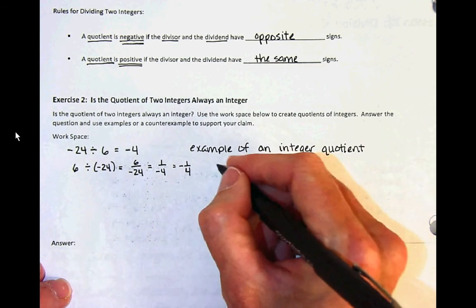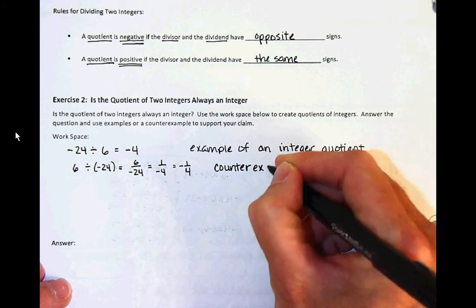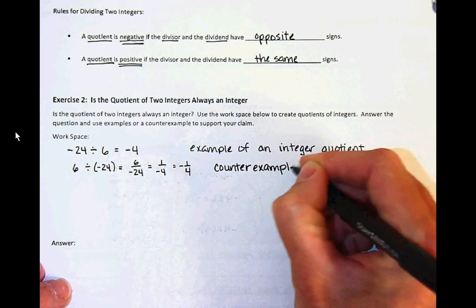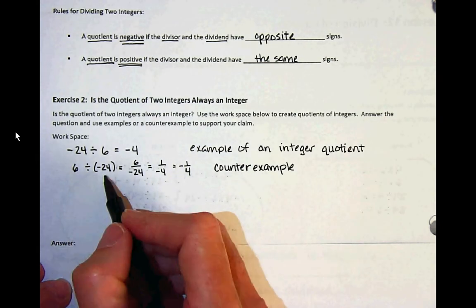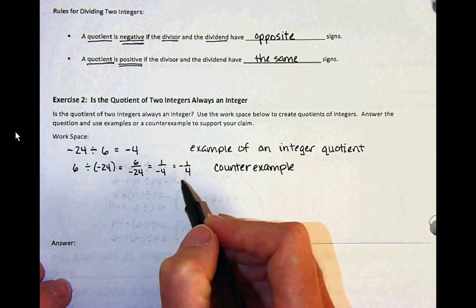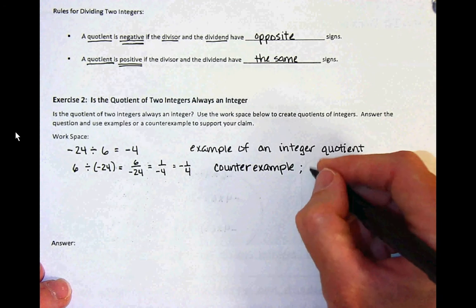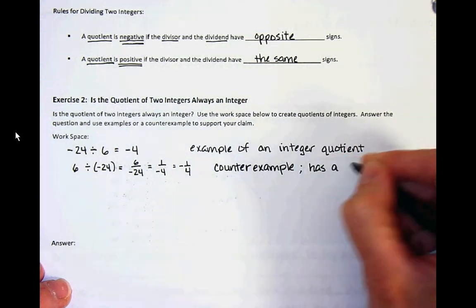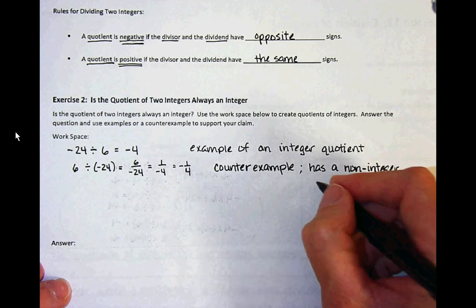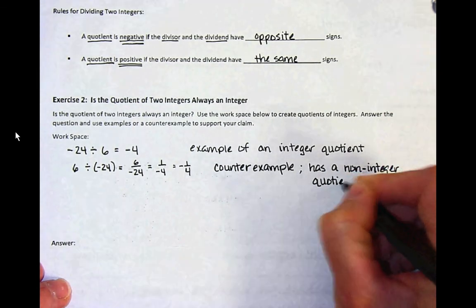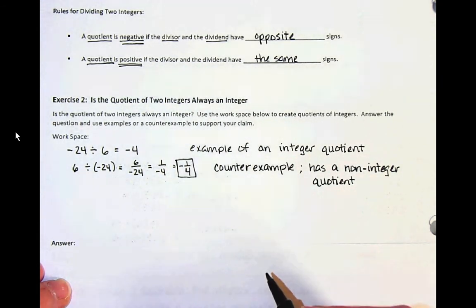So this would be called a counterexample because it's not matching up with what we want. We're asking: is the quotient of two integers always an integer? 6 is an integer, negative 24 is an integer, but the answer — the quotient — is not an integer. It's a rational number. And we call that a non-integer quotient because it is not an integer. When we have a fraction that is not an integer, that is a rational number.